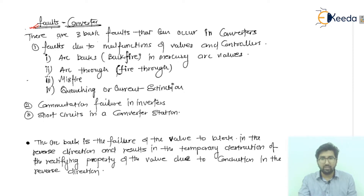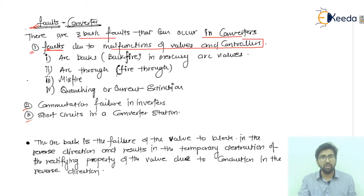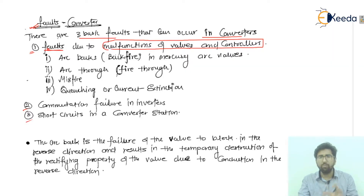There are three basic faults that can occur in the converter. The first point is faults due to the malfunctions of the valves and the controllers. We have a converter station in which we use valves — that is, thyristors — along with a controller system. If there is a fault occurring in those equipments, there are four causes to consider.